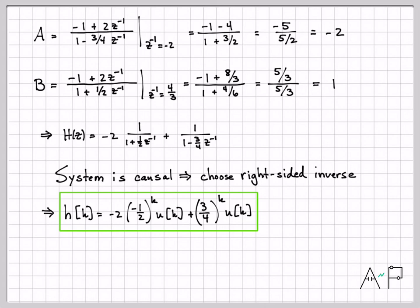That's it for this example. We worked an example where, given a difference equation, we found the transfer function and impulse response of the system using the Z transform. In the next examples, we'll do different combinations of things. We'll start with a transfer function and go back to a difference equation, or maybe start with input-output pairs and solve for the transfer function directly. Keep watching for more practice with the Z transform.